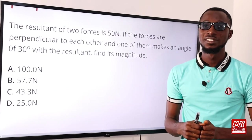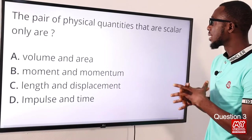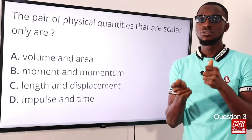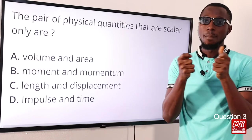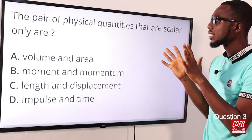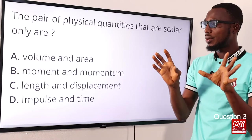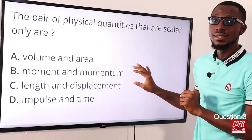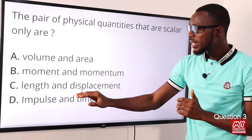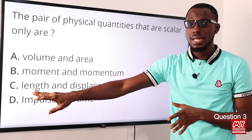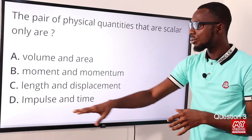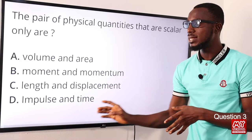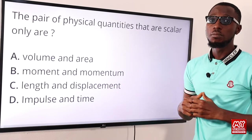Question three: the pair of physical quantities that are scalar only. Scalar quantities have magnitude but no direction; vector quantities have both. Looking at the options: momentum is a vector, displacement is a vector, impulse is a vector. Volume and area are both scalars. The correct option is A: volume and area.